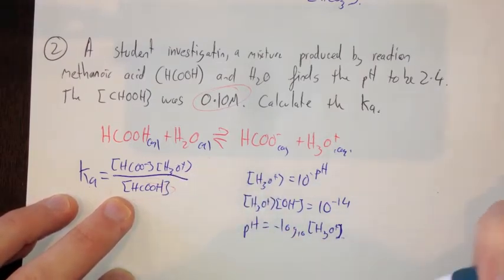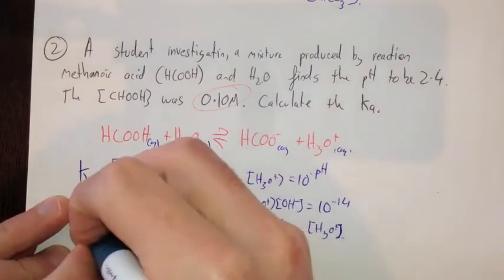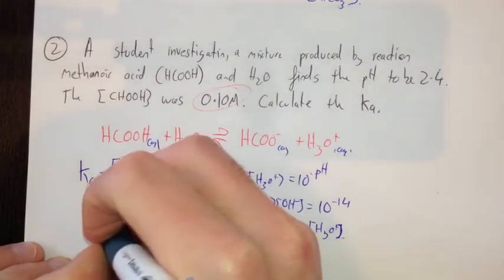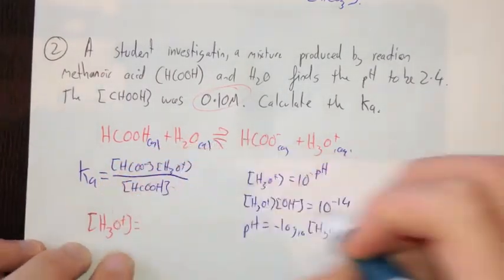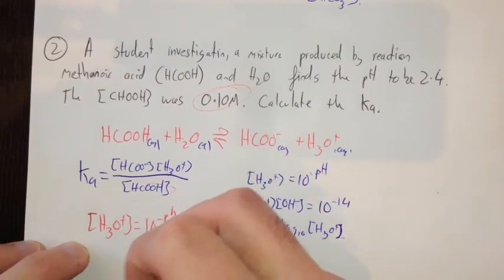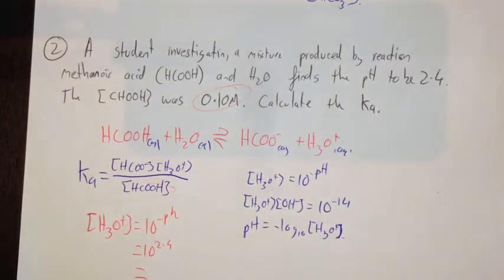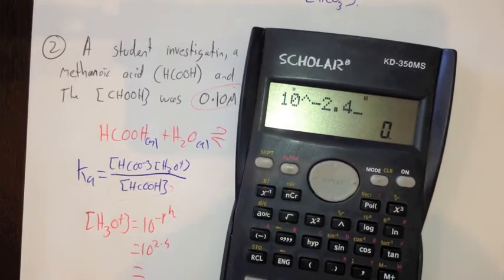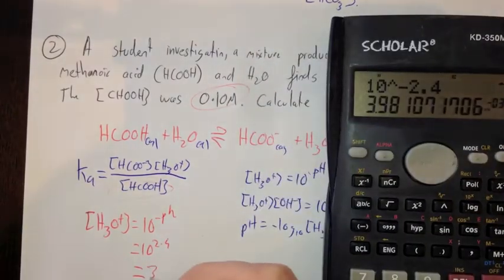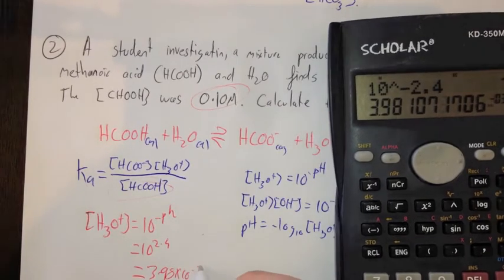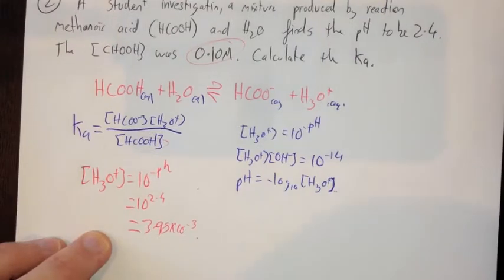So let's do that. Concentration of hydronium equals 10 to the negative pH, which equals 10 to the negative 2.4, which I'll put into a calculator. 10 to the power of negative 2.4 is 3.98 times 10 to the negative 3. That is the concentration of hydronium.